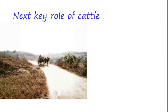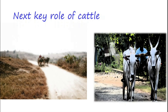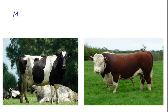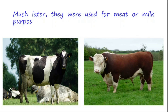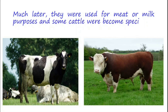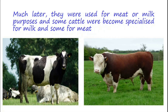The next key role for cattle was as draft animals to pull carts for temple ceremonies and in sacrificial rites. Much later, they were used for meat or milk purposes, and due to artificial selection, some cattle became specialized for milk and some became specialized for meat. However, many of them served as dual purpose by supplying both milk and meat.